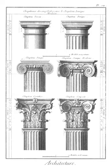Pseudo-dipteral: similar to a dipteral temple, in which the columns surrounding the naos have had walls built between them, so that they become engaged columns, as in the great temple at Agrigentum. In Roman temples, in order to increase the size of the cella, the columns on either side and at the rear became engaged columns, the portico only having isolated columns.